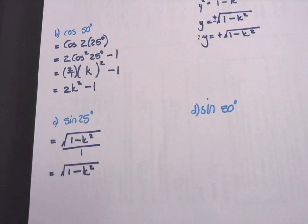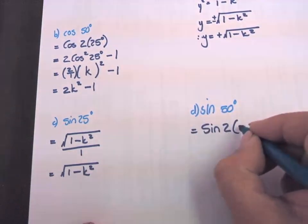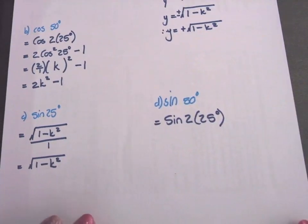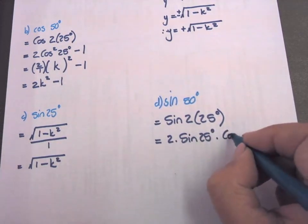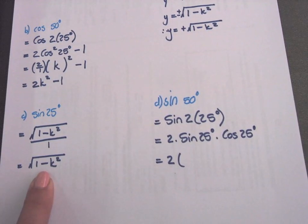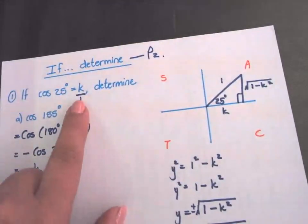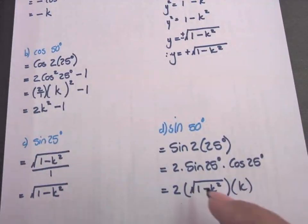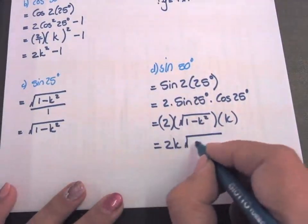Sine 50 degrees. What can we do there? We can change it to sine 2 times 25 degrees. And what is the formula for a double sine? 2 sine 25 degrees times cos 25 degrees. Sine 25 is number C's answer, the square root of 1 minus K squared. Cos 25 they gave us as K. Now you just multiply everything so it will be 2K square root 1 minus K squared.